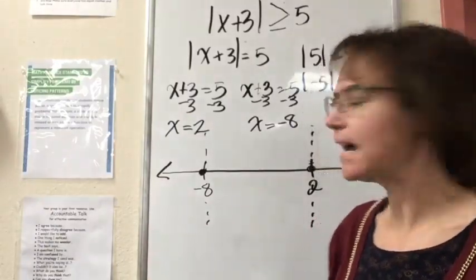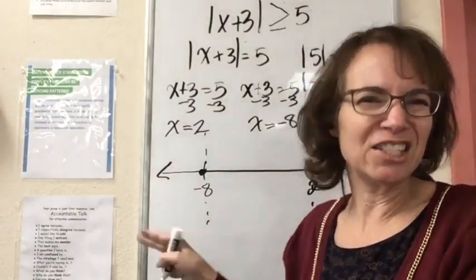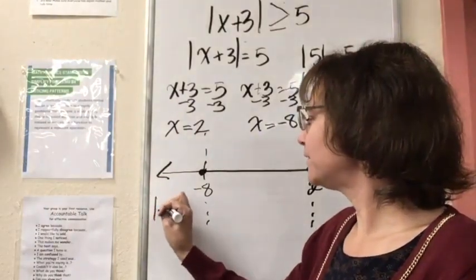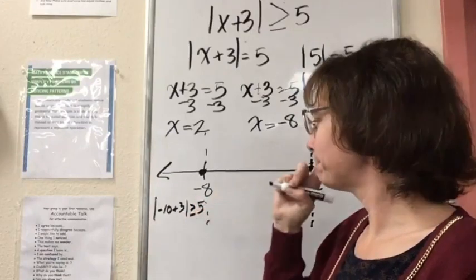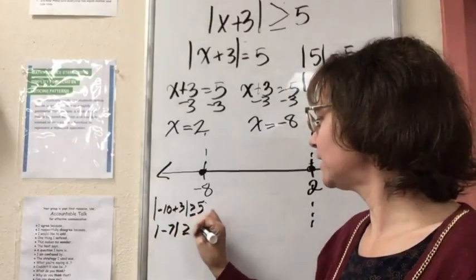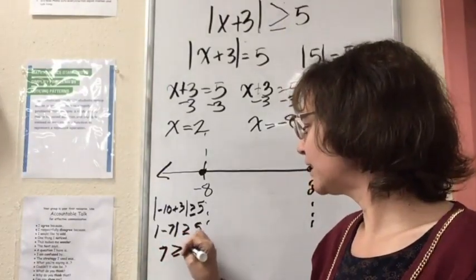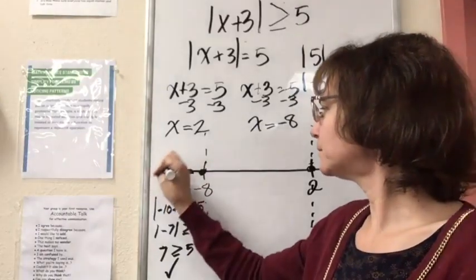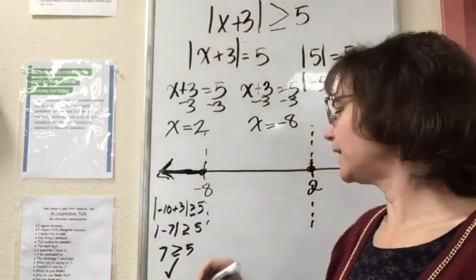Now let's check to the left of negative 8. To the left might be negative 10. The absolute value of negative 10 plus 3 — I want to check if that's greater than or equal to 5. That gives the absolute value of negative 7, which is 7, and 7 is greater than or equal to 5. That is true, so negative 8 and everything to the left of negative 8 is part of the solution.